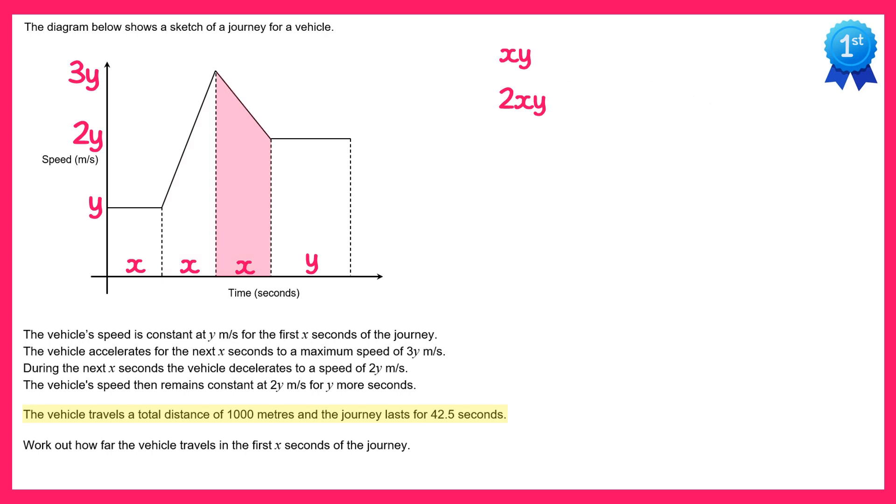Moving on to this section here, once again it's a trapezium so we'll do one half times the sum of the parallel sides, this time it's 3y and 2y, multiplied by the height which is x. If you add 3y and 2y you get 5y, times this by one half and you'll get 2.5, so it's 2.5xy.